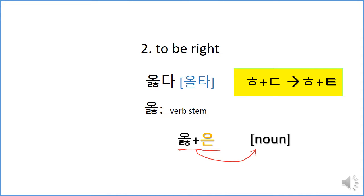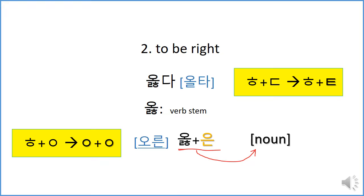And here's one more sound rule. When ㅎ meets ㅇ — the circle-looking ㅇ — ㅎ becomes ㅇ. You can see it as assimilation. So 오른 — the ㅎ sound disappeared. 오른.